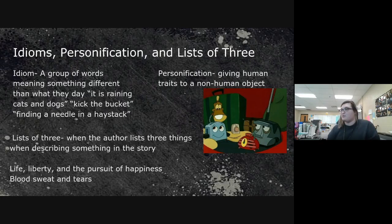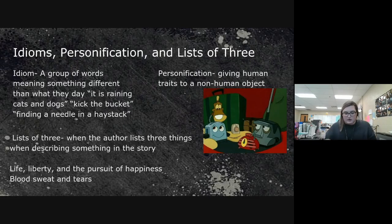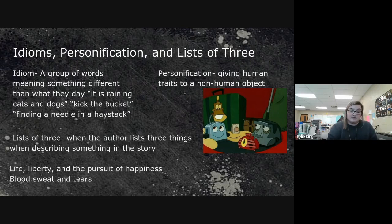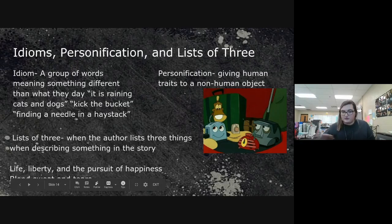Personification is giving human traits to non-human objects — think of 'The Brave Little Toaster,' where appliances have their own characters, traits, and qualities. And then there's the list of threes: when an author uses three things to describe something — 'life, liberty, the pursuit of happiness' or 'blood, sweat, and tears.' Lists of threes strengthen your story as you go along.